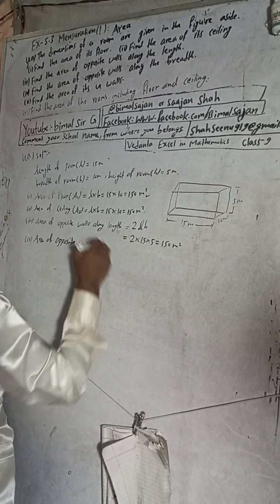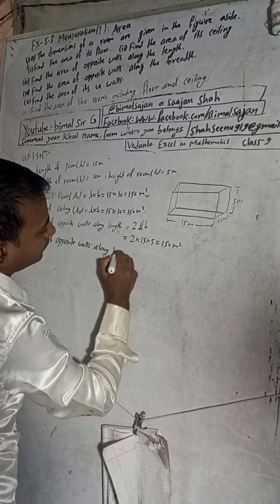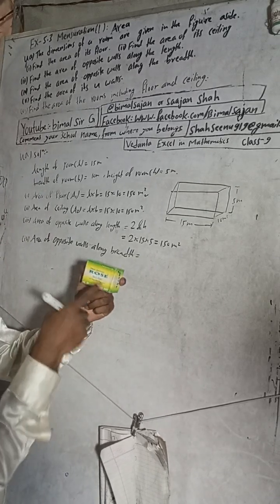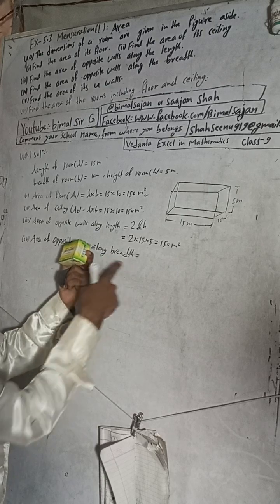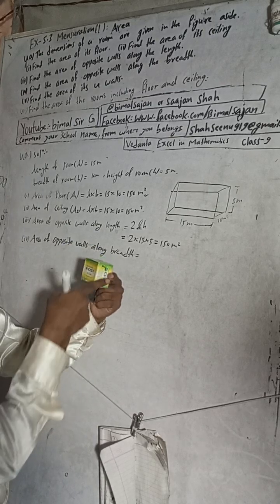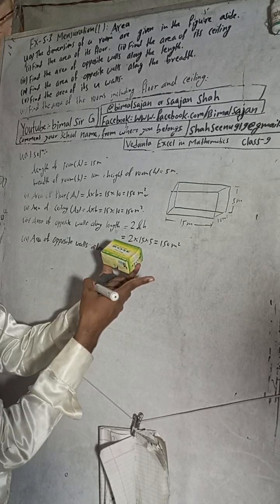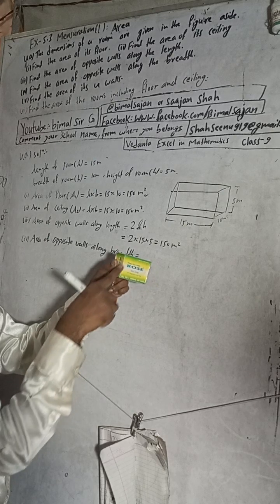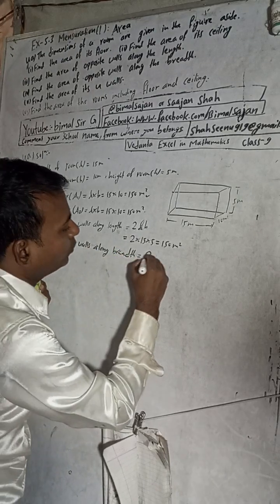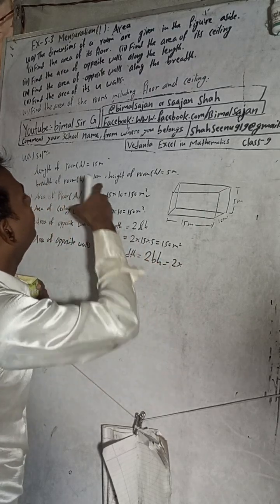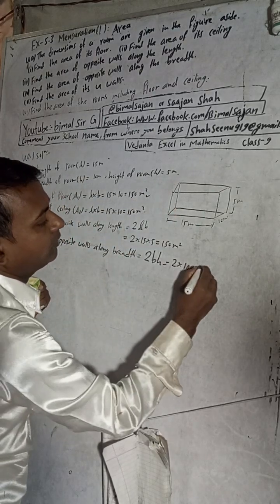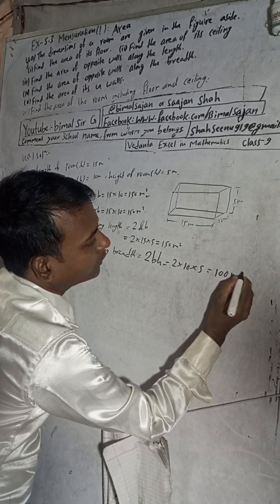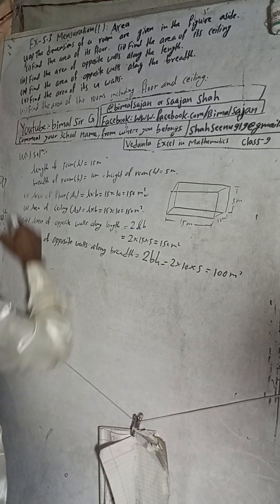Number four: area of opposite walls along the breadth. The side walls have breadth as their length dimension. Formula: 2 × B × H = 2 × 10 × 5 = 100 meter square.